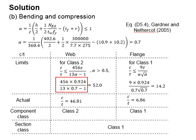Substitute the relevant values, you will obtain 52.0 as the limit for class 2. The limit for the flange for class 1 is given here. Substitute the relevant values, you will get 14.2. Compared with the actual c/t ratio, you will find class 2 for the web and class 1 for the flange.